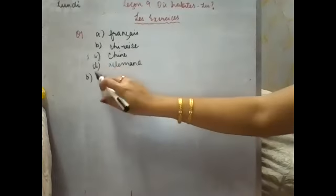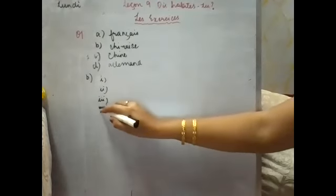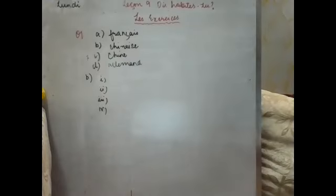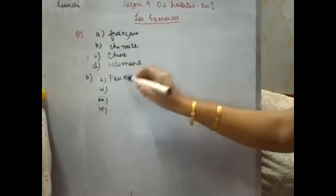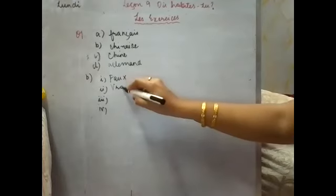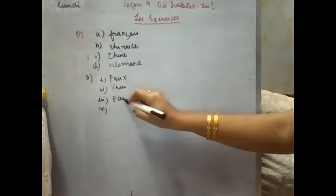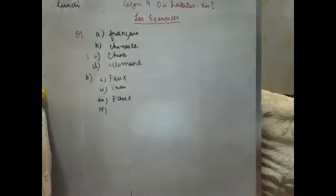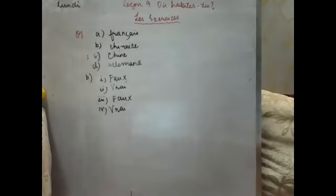B part. This is Faux et Vrai, false and true. Accordingly you need to answer. First is Peter est ami de Richard. Peter is the friend of Richard. Faux, because Peter was the friend of Yoko. Next, Yoko est chinoise. Yoko was Chinese. Vrai. Next, Yoko habite en Allemagne. Faux, she was Chinese so she lived in China. Peter est allemand. Peter was from Germany, that is Vrai.